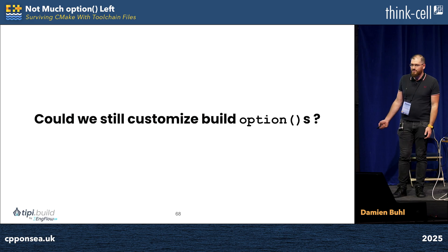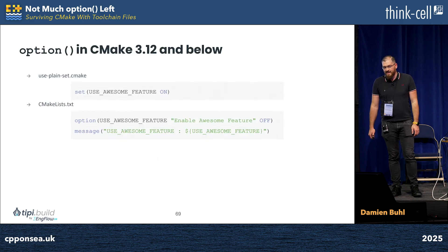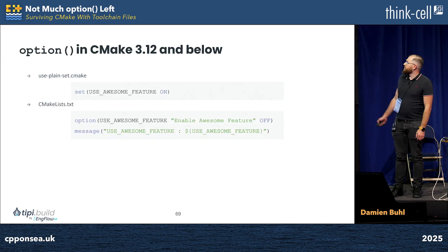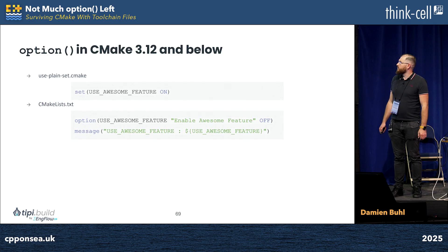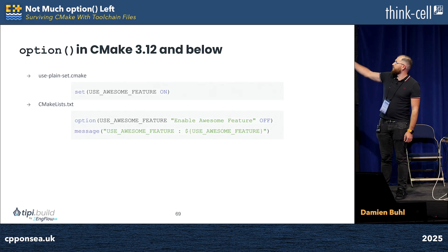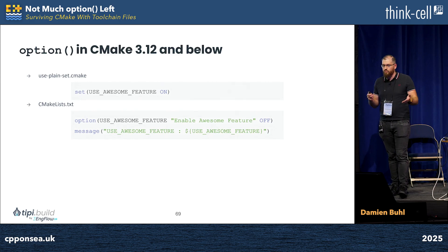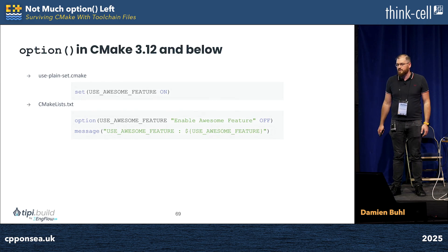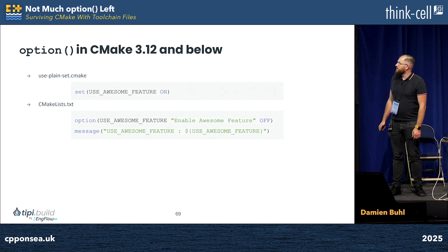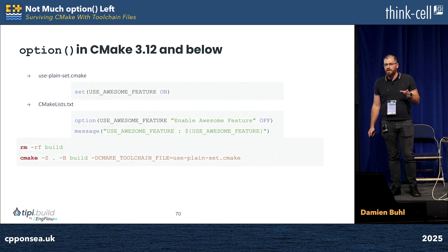But we have options in CMake, so we can just use it. Let me take you on a very confusing CMake adventure. The very simplest toolchain file — the first line on the top — sets USE_AWESOME_FEATURE equal to one to enable this feature, which is awesome. In the CMakeLists, you have the option so that different build types would enable or disable it.